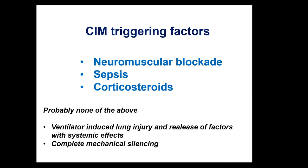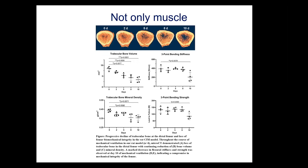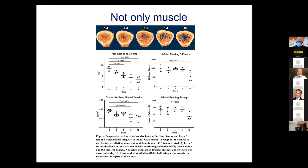It's not only muscle that is affected by this release of factors — it also has a strong impact on bone. We see loss of femoral trabecular bone volume, which results in decreased bone strength and increased fracture risk. This is very clinically relevant because after ICU and hospital discharge, these patients leave with both weak bones and weak muscles — both very important for predicting the risk of falls and fractures, especially in the elderly.